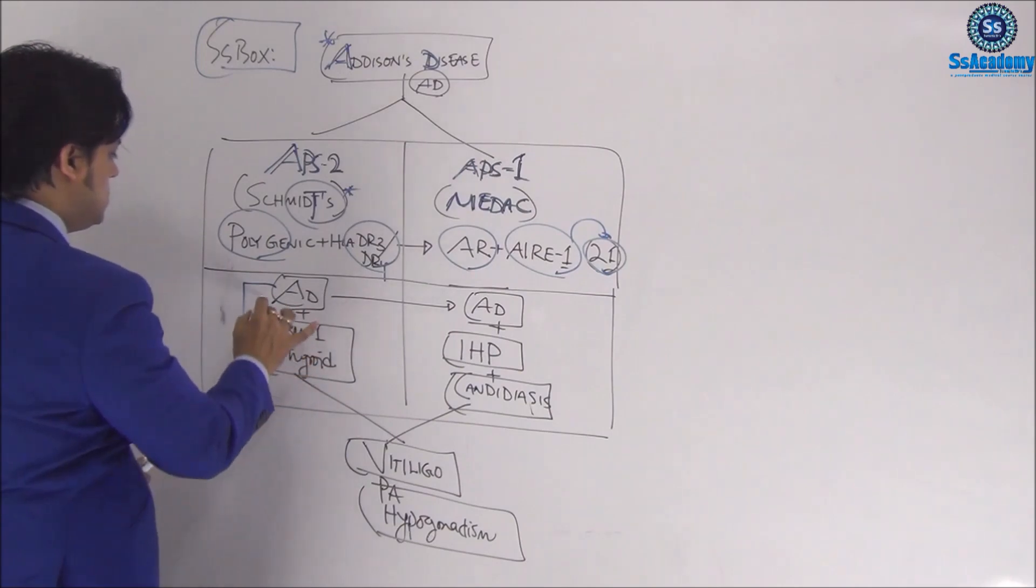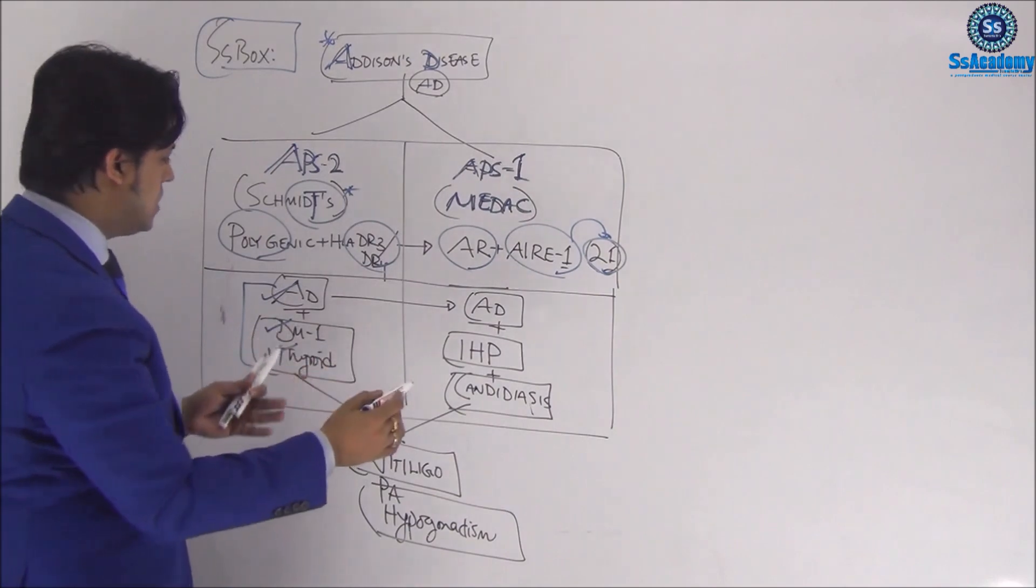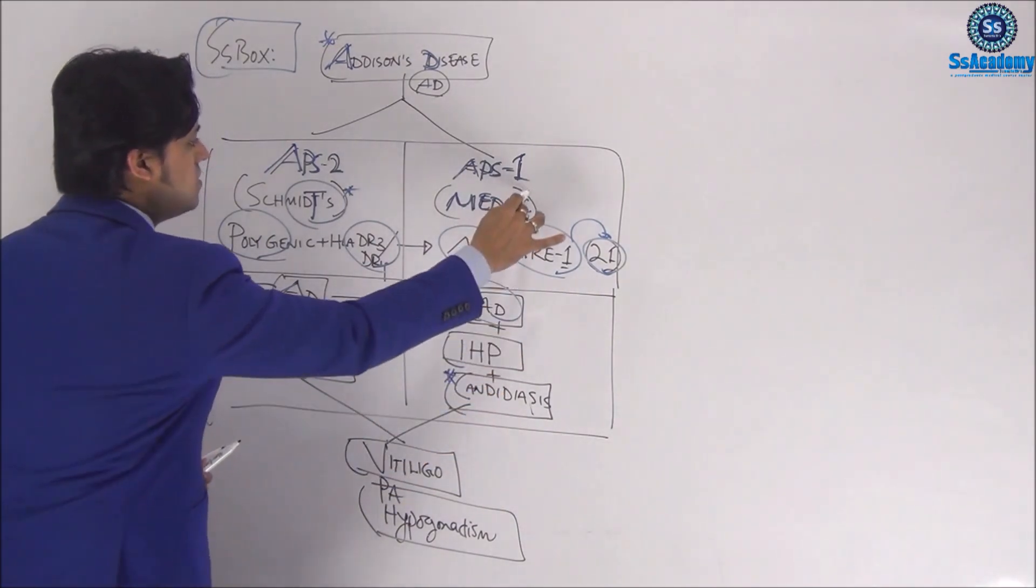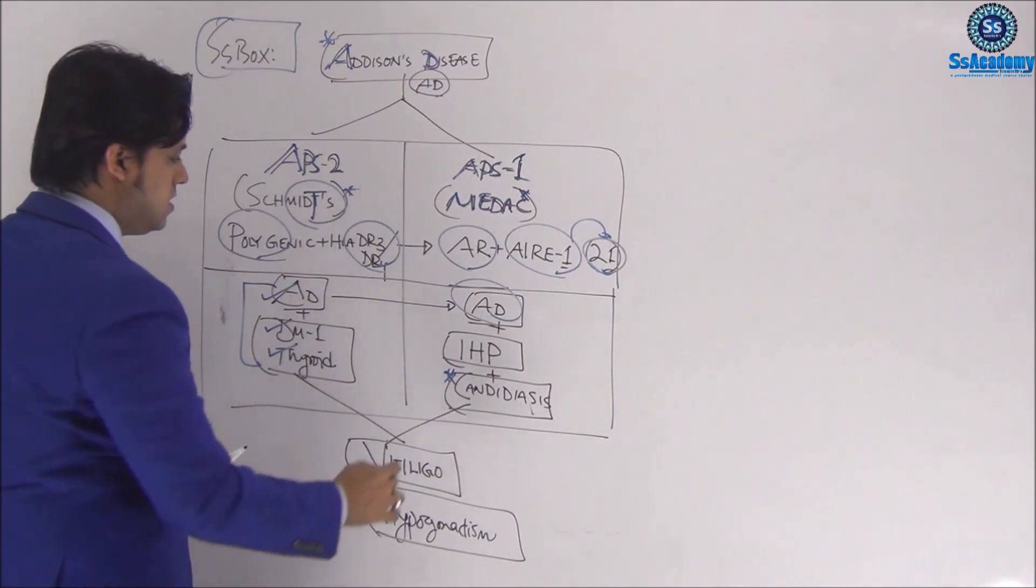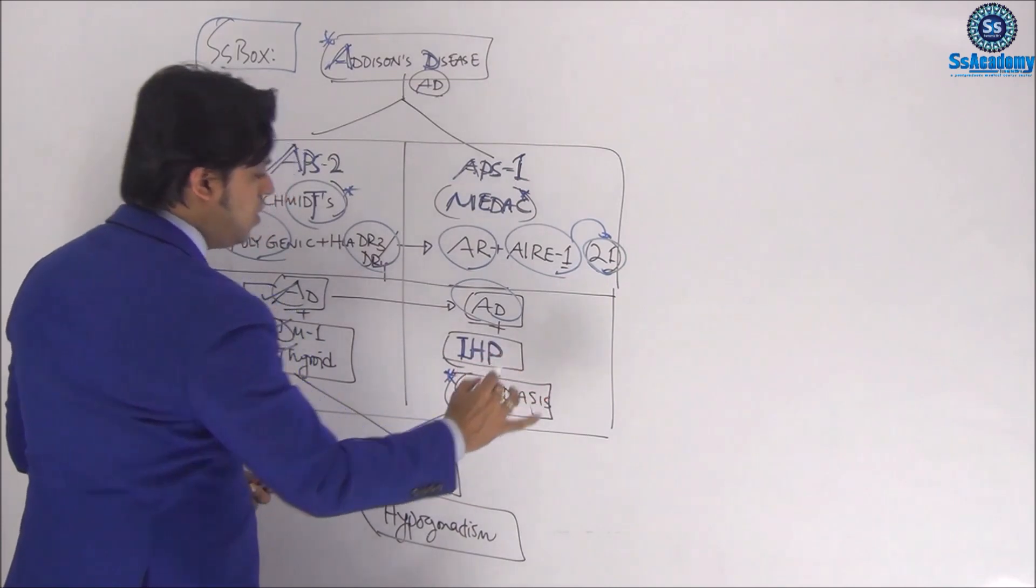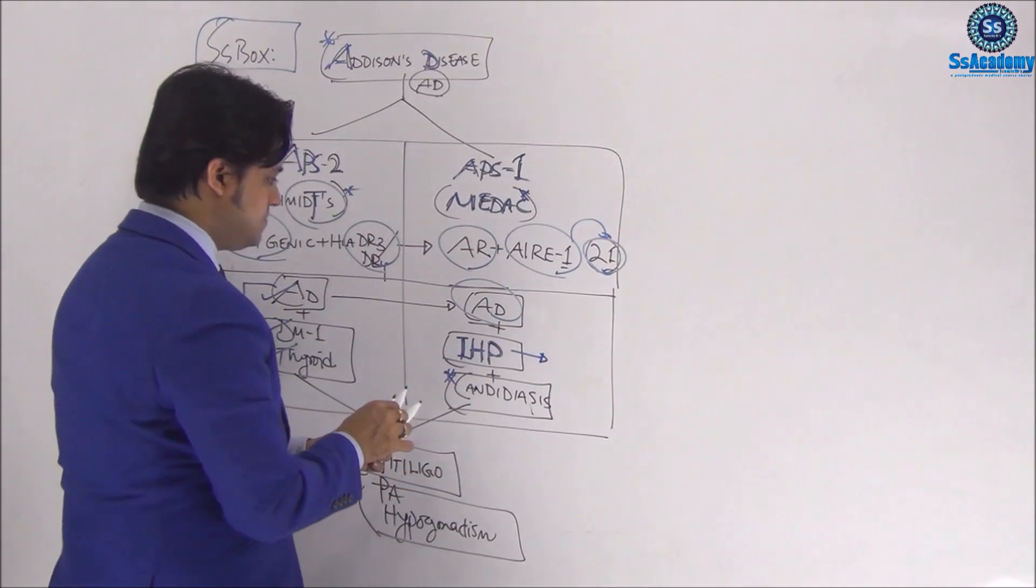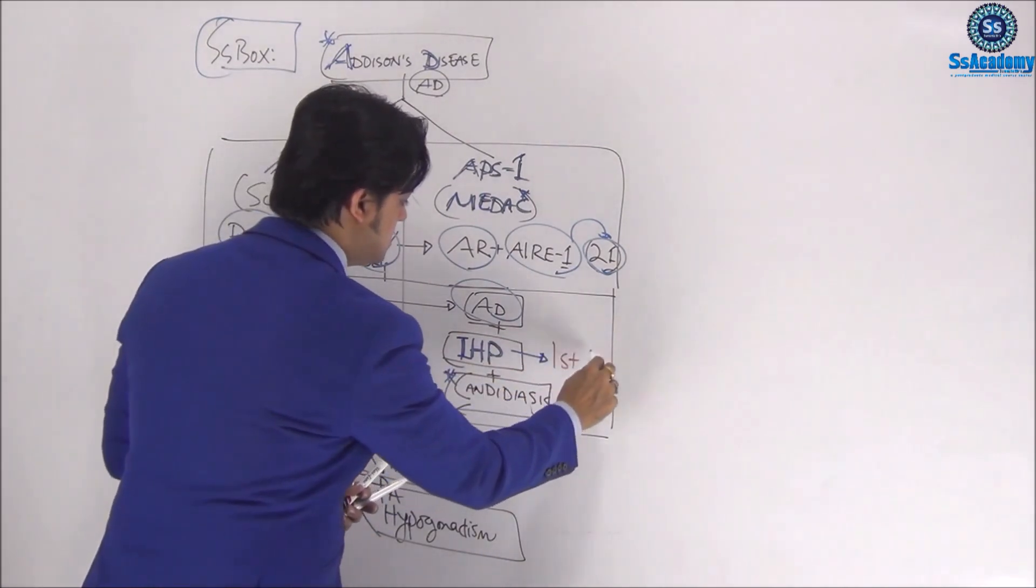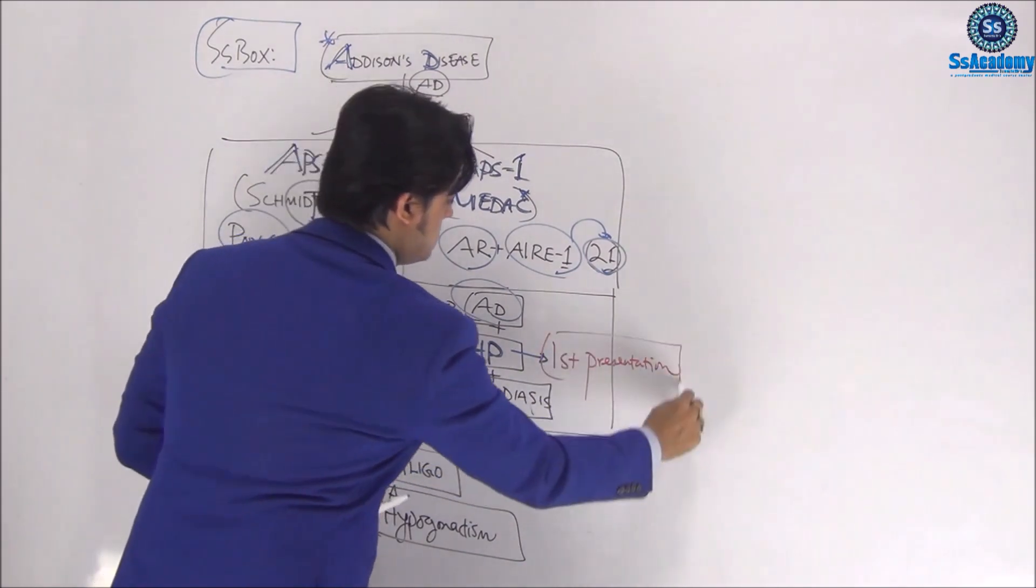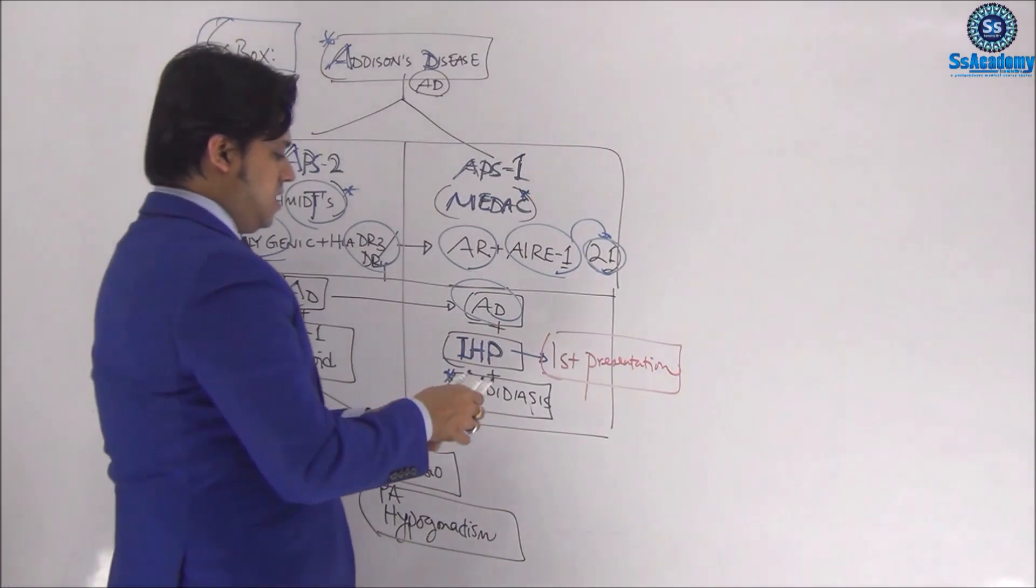You need to remember type 1 diabetes and autoimmune thyroid disease. In contrast, Addison's disease is common, but candidiasis—C for candidiasis—we need to remember. But idiopathic hypoparathyroidism or autoimmune hypoparathyroidism is the first presentation in this syndrome. This is very important.